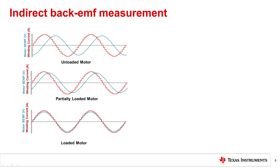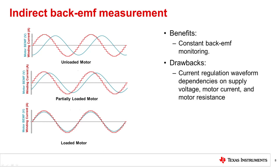The current regulation waveform is observed in both rising and falling quadrants to estimate the back EMF phase shift between both quadrants and determine if the motor is unloaded, fully loaded, or has reached a stall condition. The constant current regulation waveform monitoring allows the algorithm to work for all microstep settings, including full step, which is an advantage that indirect back EMF measurement has over direct back EMF measurement.